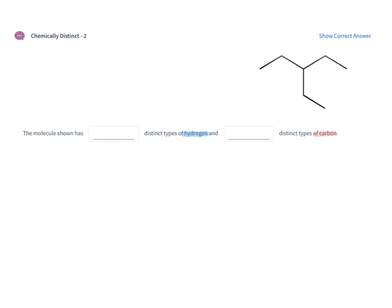So let's start with the carbons because we have a nice picture of the carbon framework in this molecule. We first have our central carbon atom right here — that is the first type of carbon, labeled A. Then connected to that carbon we have CH2 groups. All three of those are equivalent, so that is carbon type B. And then finally connected to the CH2, we have a CH3 — that is carbon type C. So in this molecule there are three distinct types of carbons.